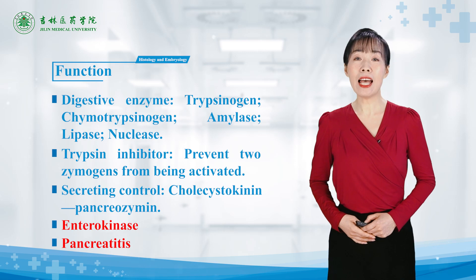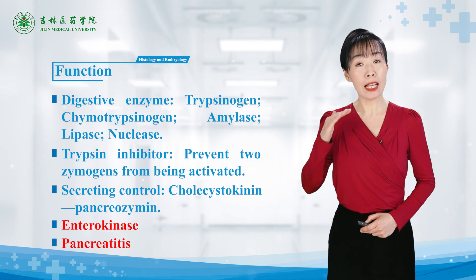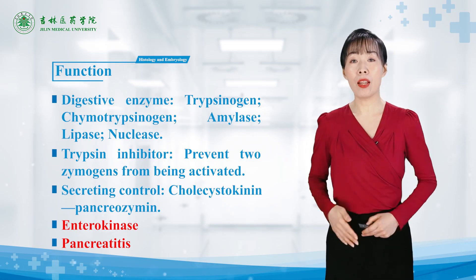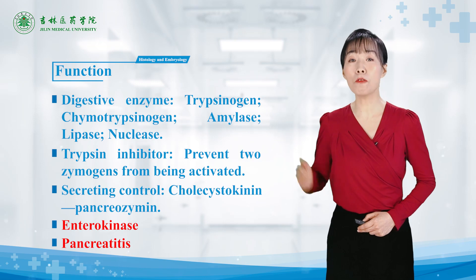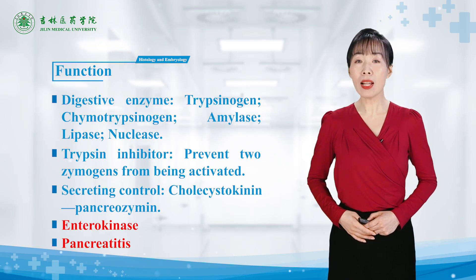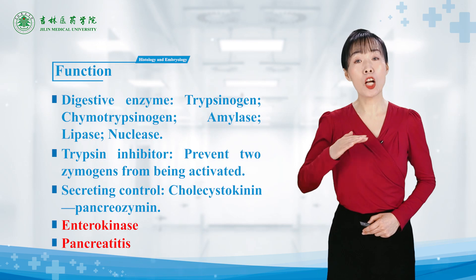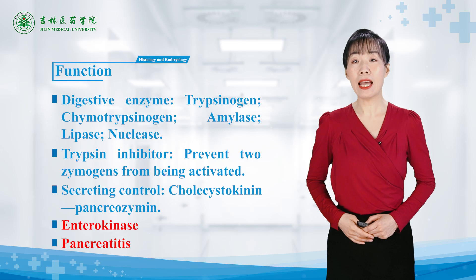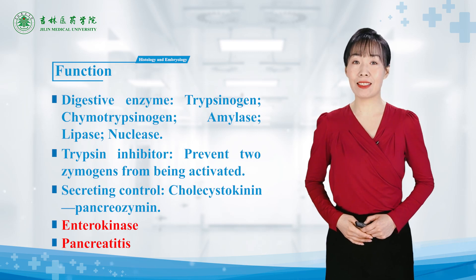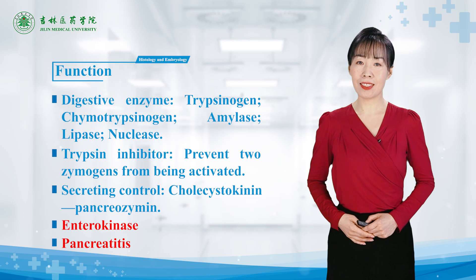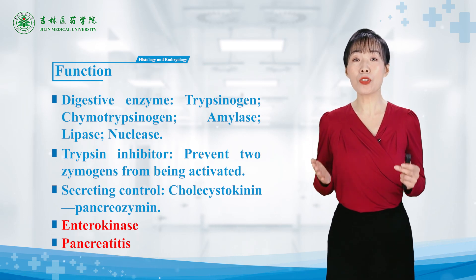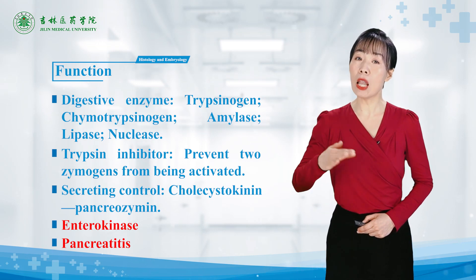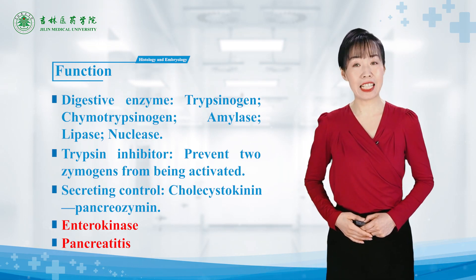Trypsinogen and chymotrypsinogen are inactive. Because if they were active in the serous cell, they would cause self-digestion of the tissue. Only after being released to the lumen of the small intestine can they be activated by enterokinase, secreted by absorptive cells. Serous cells also secrete trypsin inhibitors, which prevent those two zymogens from being activated.